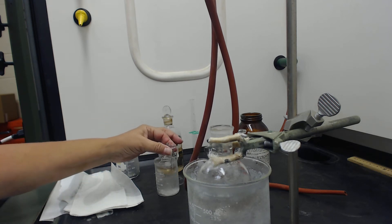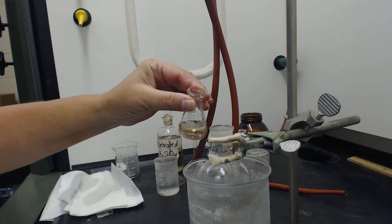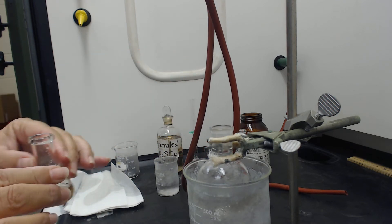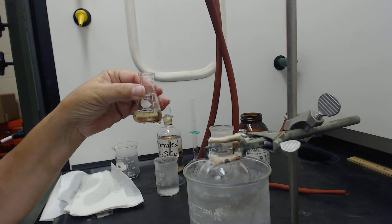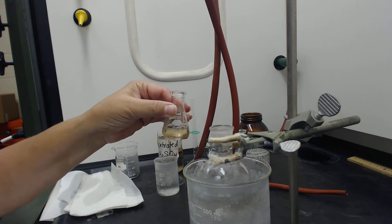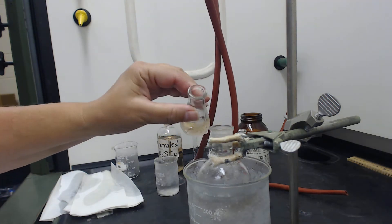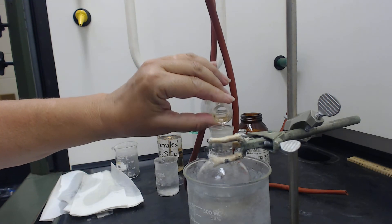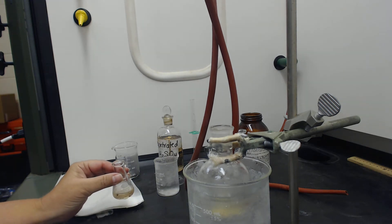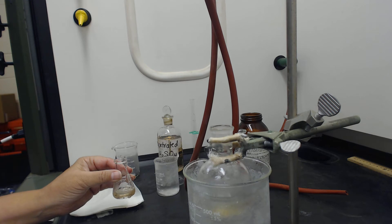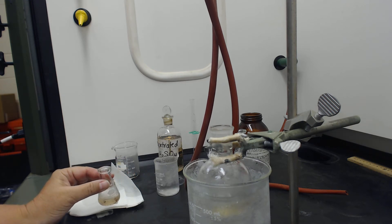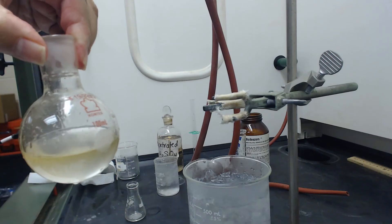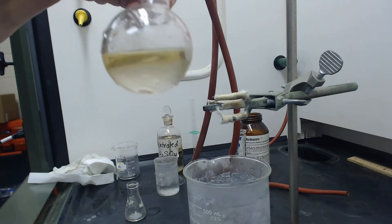Now I'm going to slowly add it to my flask over a few minutes. I'll just pour a little bit in. It's bubbling, so it's very exothermic. I'm going to continue. I'm going to pause this while I continue to do that.